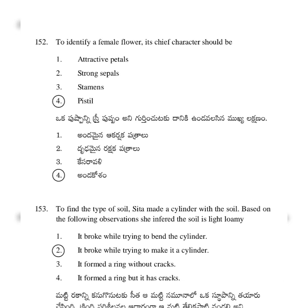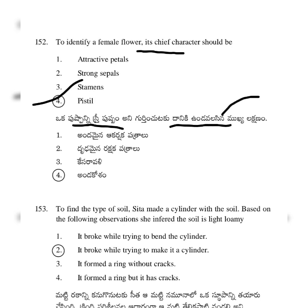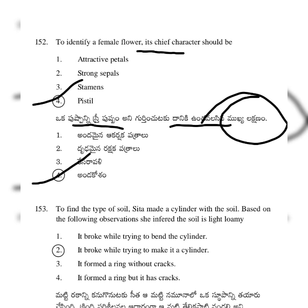To identify a female flower, its chief character should be a pistil. Option 4: the pistil is the identifying feature of a female flower.